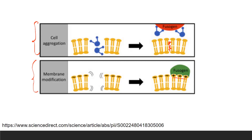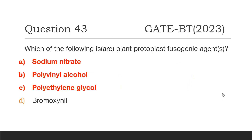From the four options, the correct answers are the first three: sodium nitrate, polyvinyl alcohol, and polyethylene glycol. Sodium nitrate works via the second mechanism — membrane modification — while polyvinyl alcohol and polyethylene glycol cause membrane aggregation.